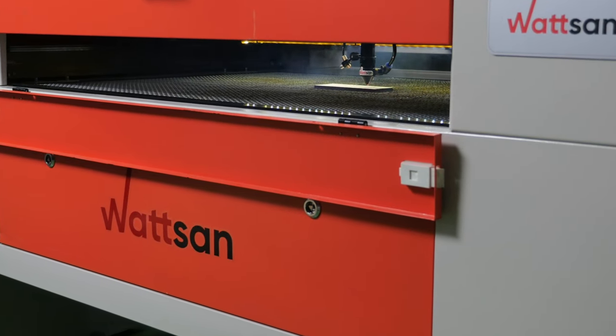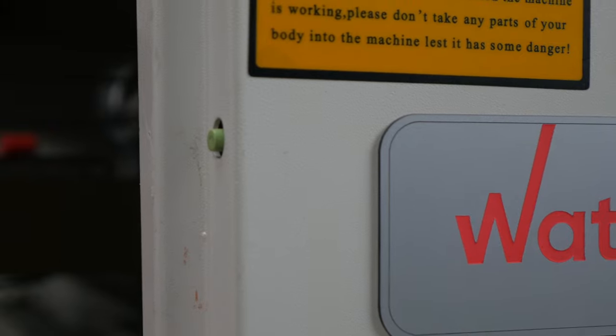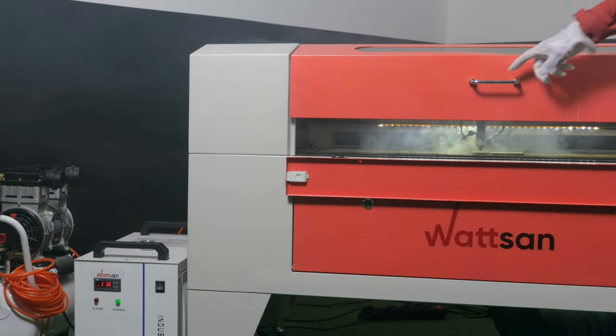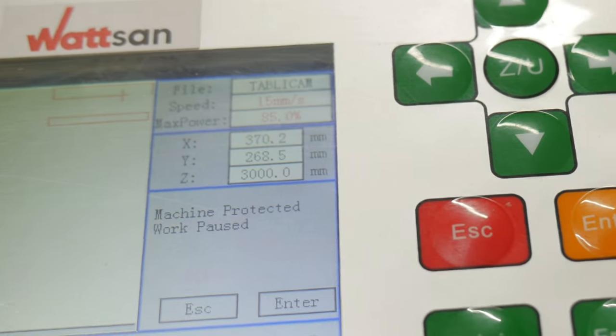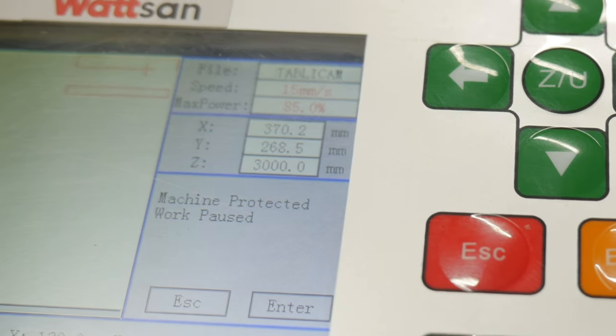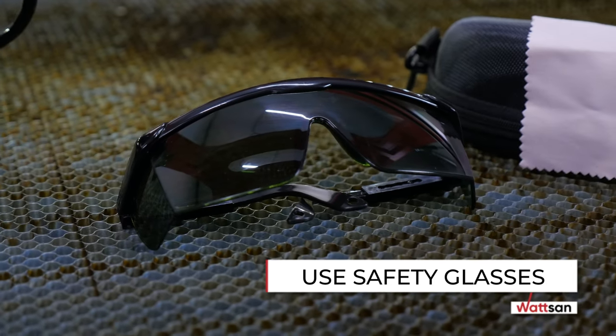It's recommended to always work with a lid closed. Watson machines have protection against opening during operation. The machine stops when the lid is open. If you regularly look at the laser while it is running, you can quickly damage your eyesight. Use safety glasses.